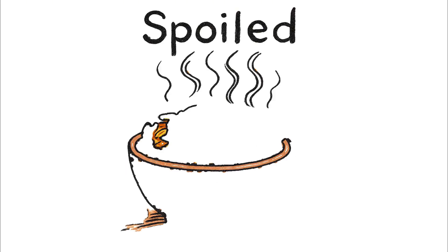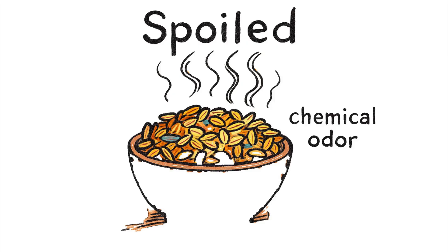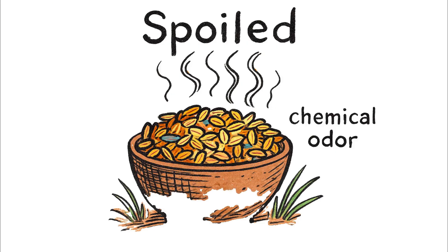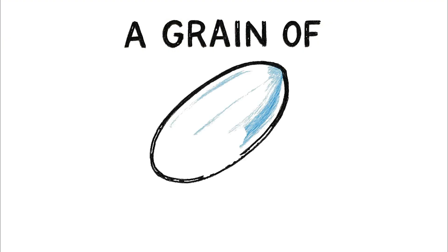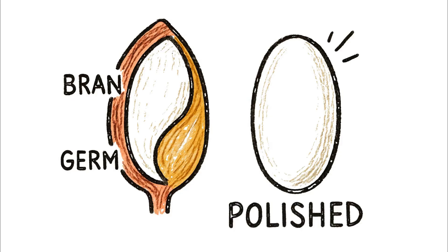Within 6, maybe 12 months, that nutritious grain is not just unpalatable, it's spoiled, emitting a chemical odor, a faint signal of decay. Now, contrast that with a grain of white rice. It has been polished, its volatile bran and germ layers stripped away. What's left is almost pure, crystalline starch, a chemically stable carbohydrate.